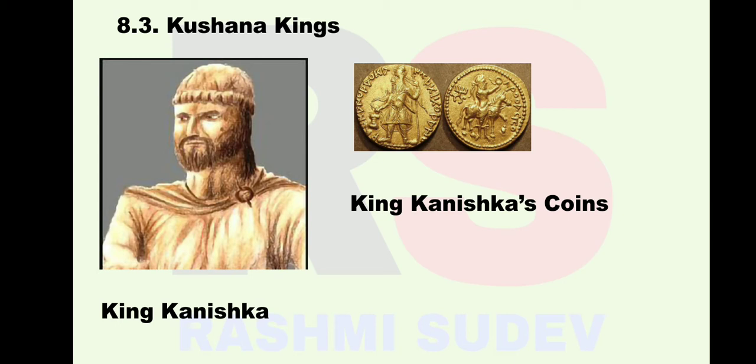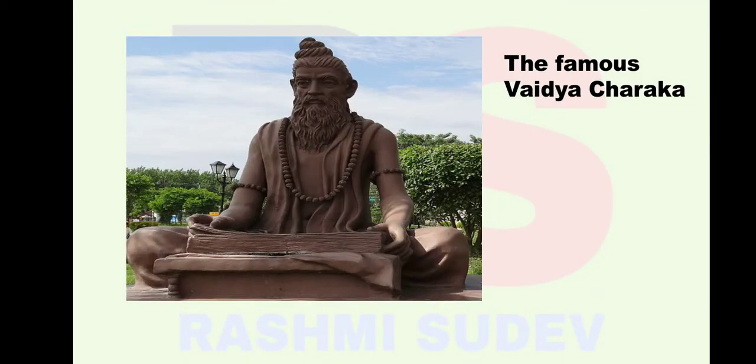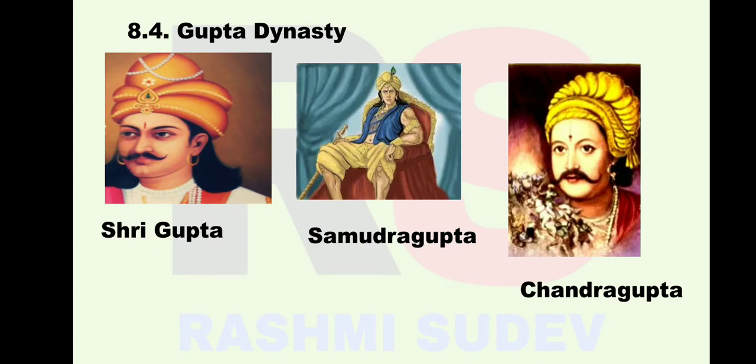There is a village in Kashmir named Kampur, near Srinagar, believed to be Kanishkapura. During Kanishka's reign, a well-known poet Ashvaghosha wrote the texts Buddhacharita and Vajrasuchi. The famous physician Charaka was also from Kanishka's court.